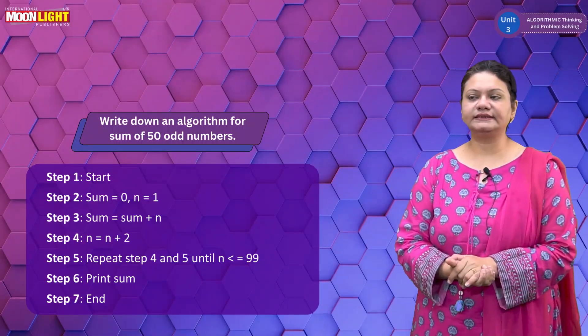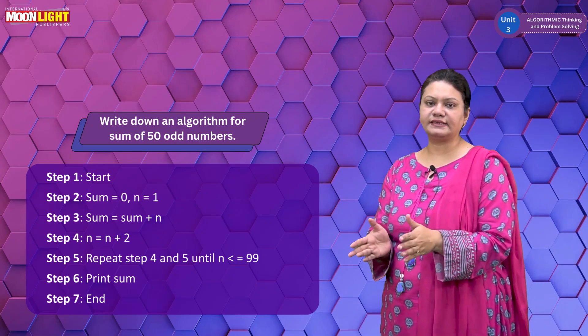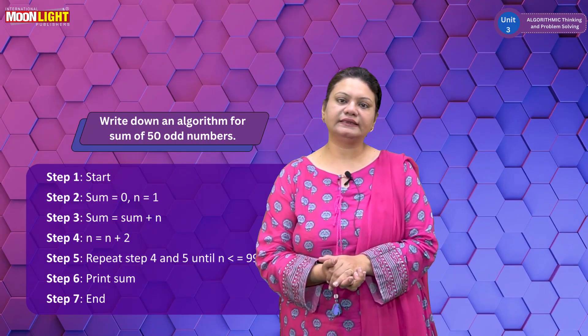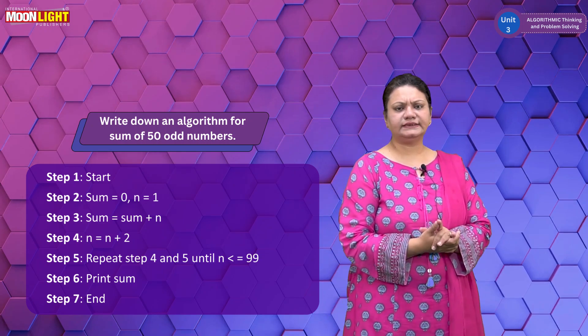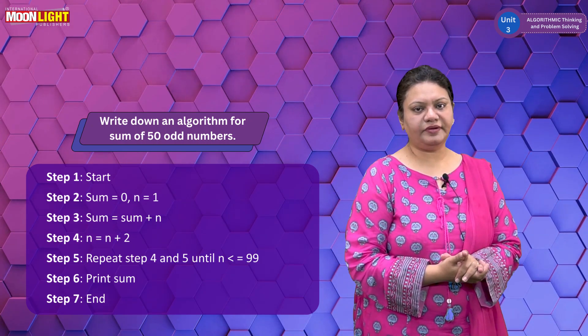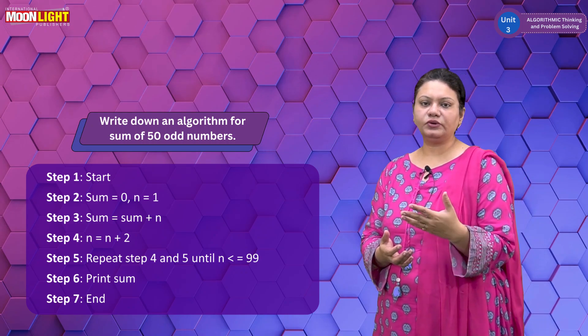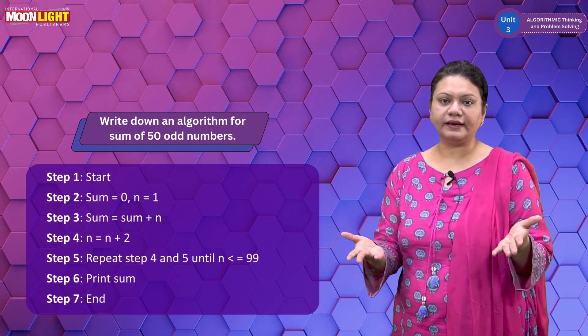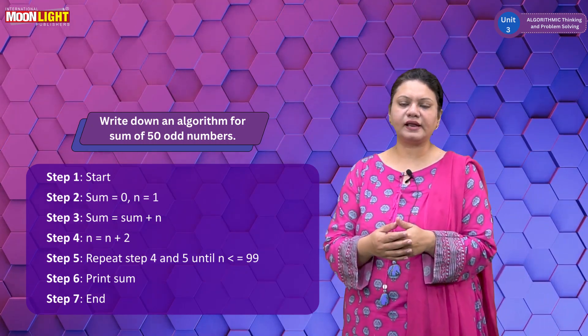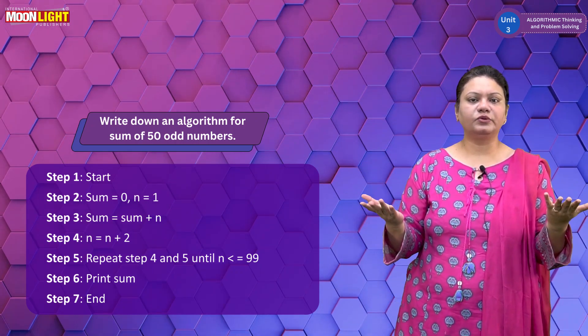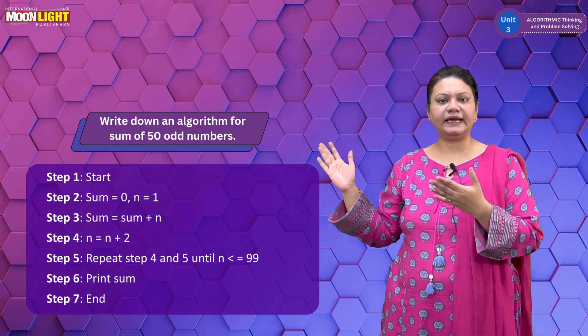Students, we are talking about flowcharts. Our previous topic was flowchart, so we have an example of odd numbers. Today we have different examples. We have a very easy example: suppose you have to draw a flowchart to multiply two numbers. For simple math, let's suppose the value of A is 4.